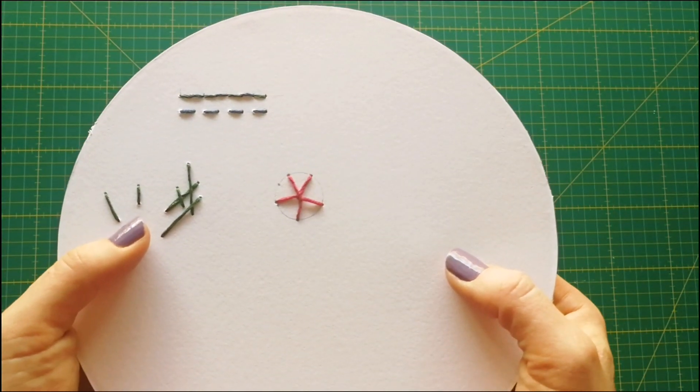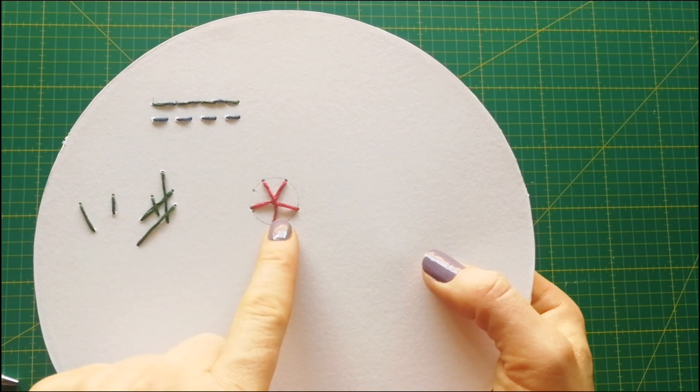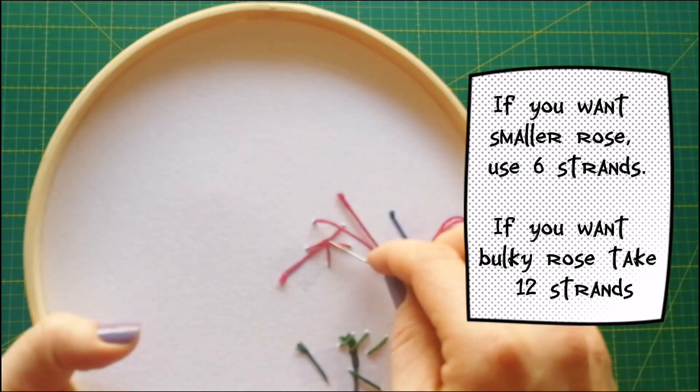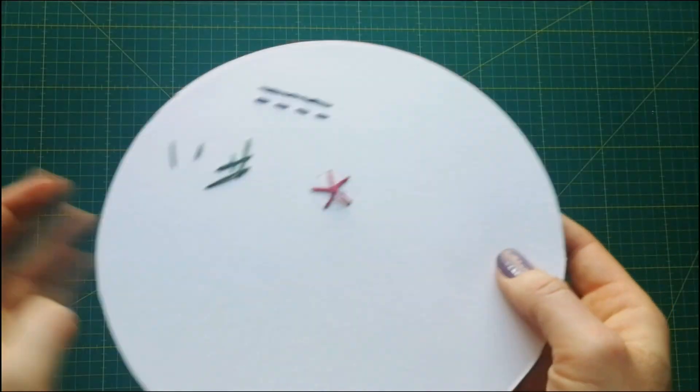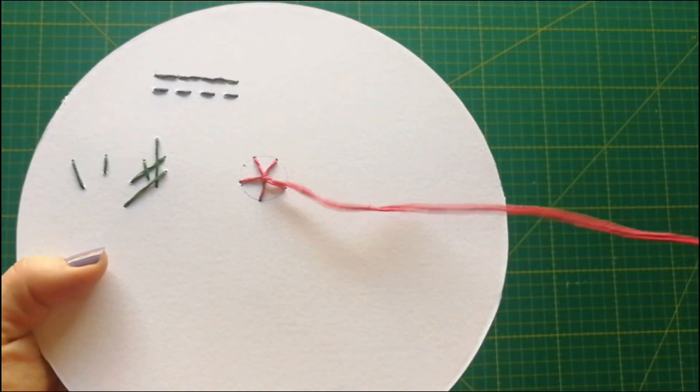Be careful, this part is a little bit tricky. Here we have used 6-strand thread, but if we want our flower to form and become bigger, we need to double the thread. So we will be working with 12 strands now.